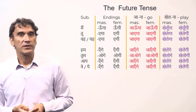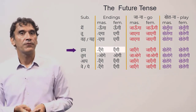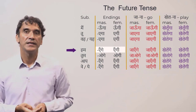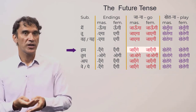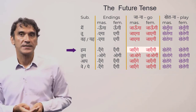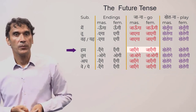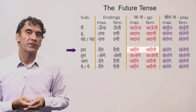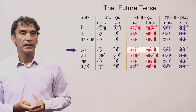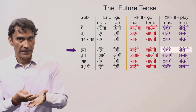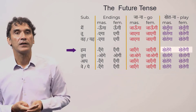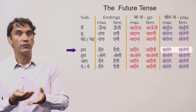For the plural subject 'hum' (we), the endings are 'enge' (masculine) and 'engi' (feminine). A group of boys will say 'hum jaenge' and a group of girls will say 'hum jaengi' — both meaning 'we will go.' For 'khelna': 'hum khelenge' for boys and 'hum khelengi' for girls — 'we will play.'